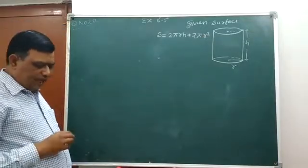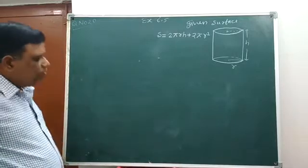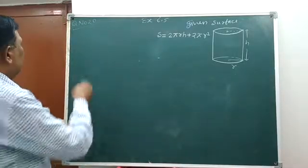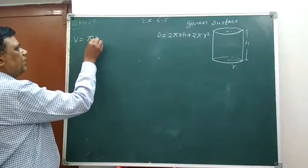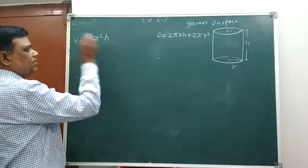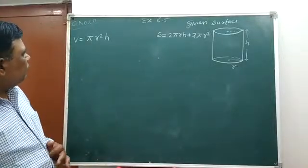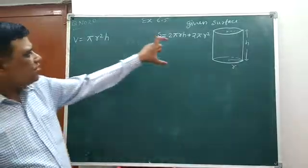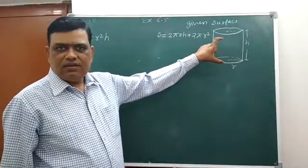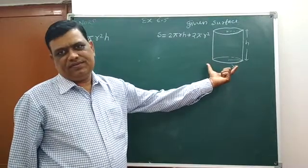So guys, we have to find the maximum volume, that volume is πr²h. At this condition, we have to know that volume is maximum if height of this cylinder is equal to diameter of the base. This is our task.